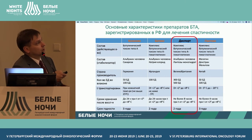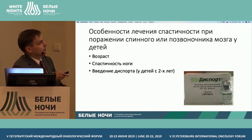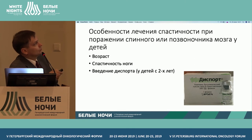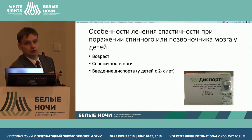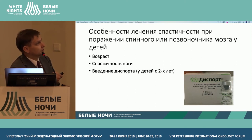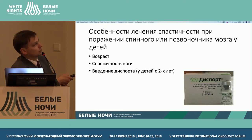Some words about medications. Disport at 300–500 units was the selected medication. Age and spasticity of the leg are important factors. This is the medication that can be used to treat spasticity of the lower limbs, and it can be used in children under two years of age. Thank you.